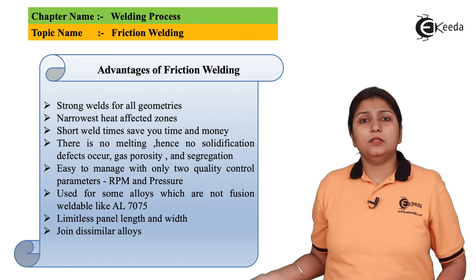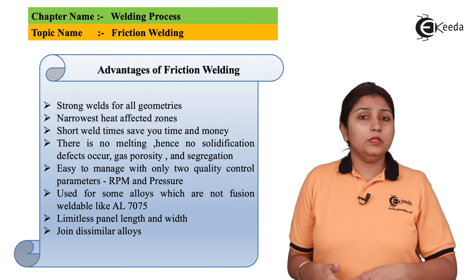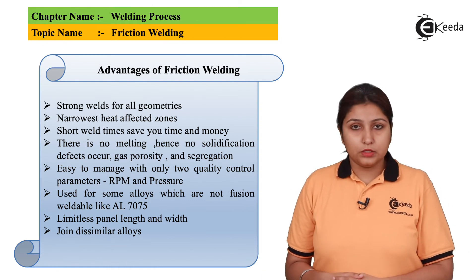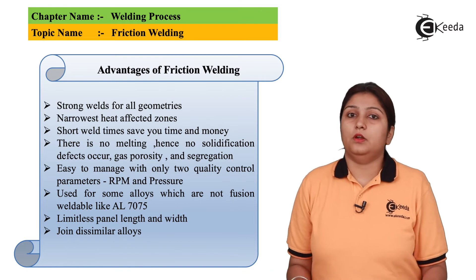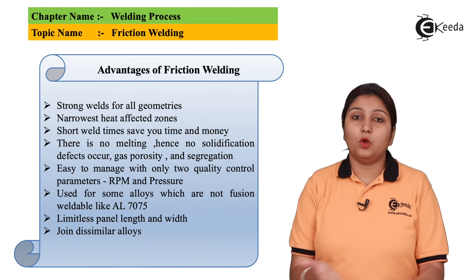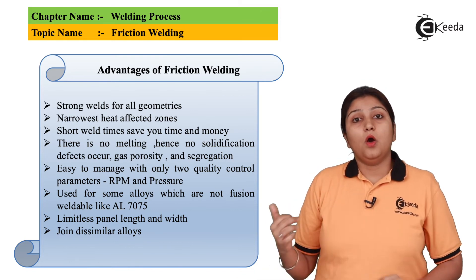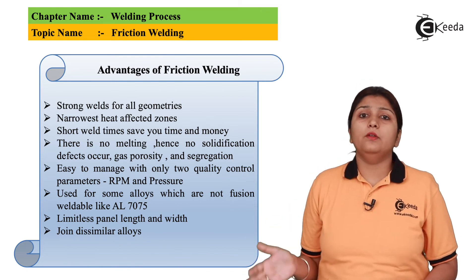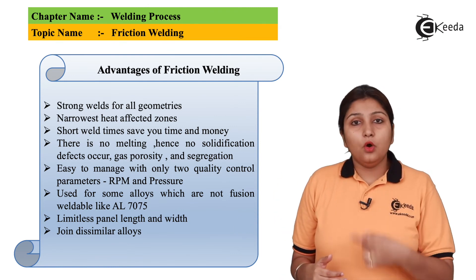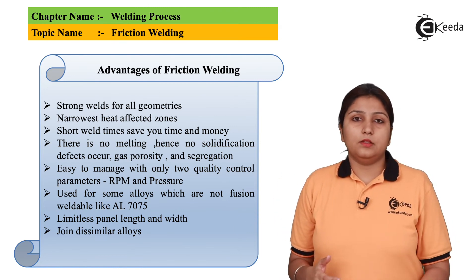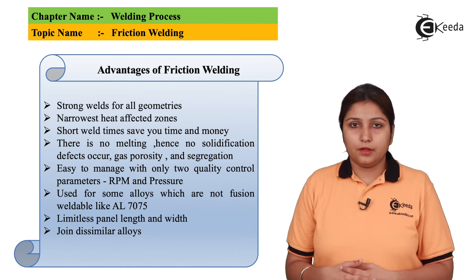These are some advantages of friction welding. It can join dissimilar alloys, meaning two or more different alloys can be joined together. Also, the weld formed is very strong and the weld area is small, so it does not affect the surrounding areas.